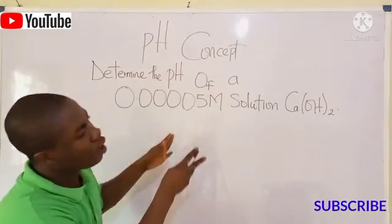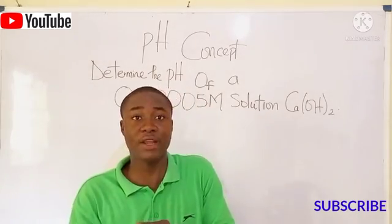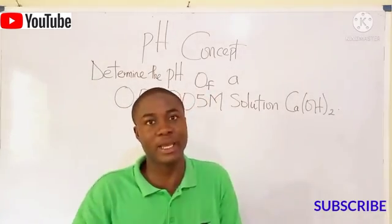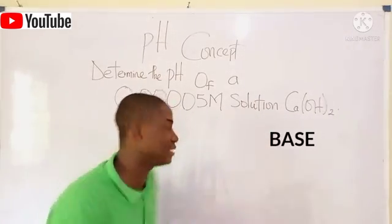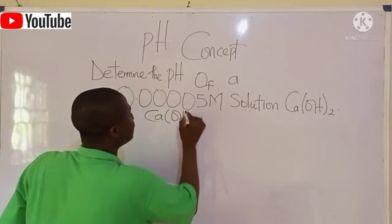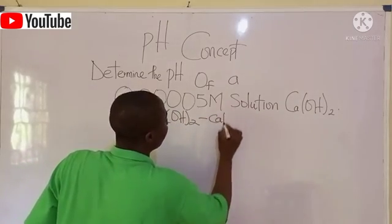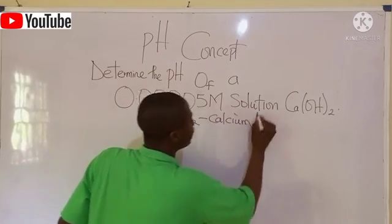First, to solve this question, we need to check the nature of the compound, if the compound is an acid or a base. Now, you can see that this compound is a base. The compound is a base and it is called calcium hydroxide.